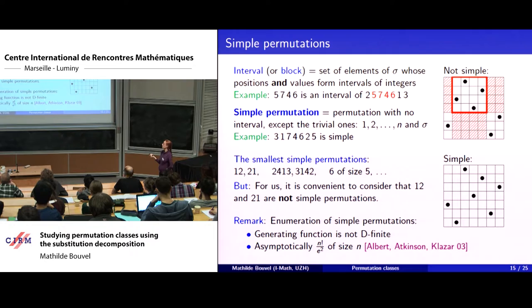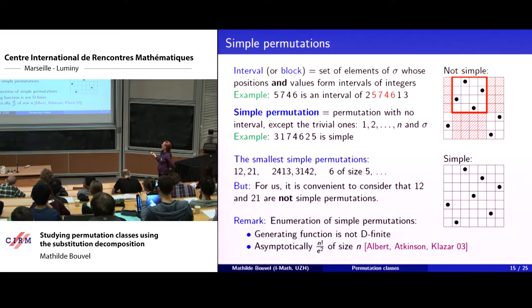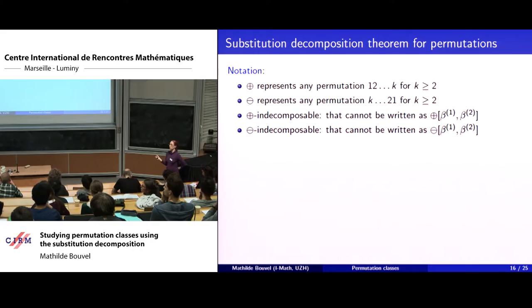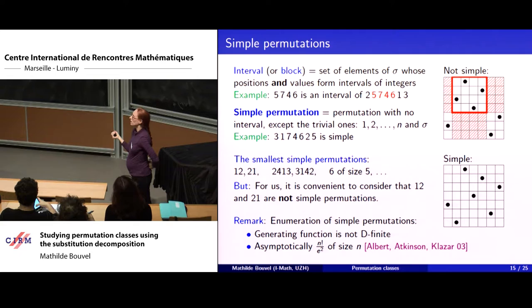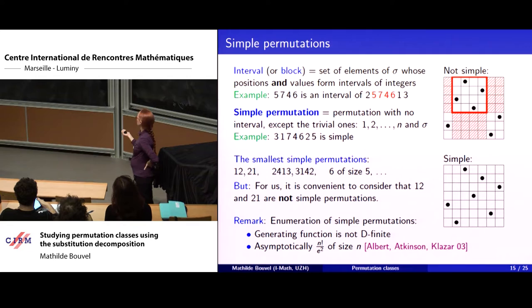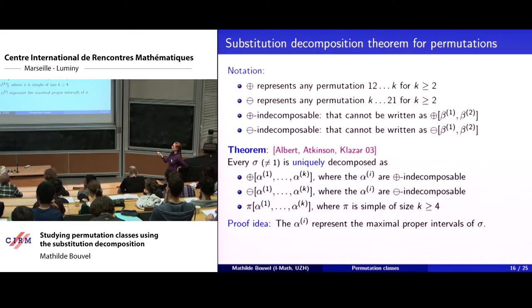If you want to know more about simple permutations, have a look at the relevant paper. The generating function of simple permutations is not D-finite, but it is explicit — related to the Catalan numbers, and the functional inverse is explicit. There are very many simple permutations: asymptotically n!/e², which is definitely not a permutation class.